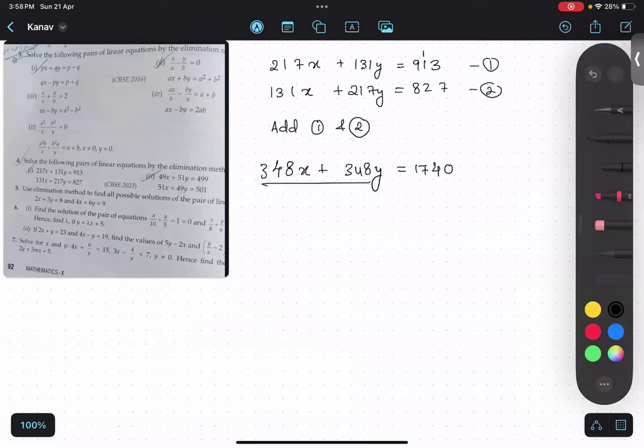Now if you see, both the numbers will have the same number. So 348 will come as a common, x plus y.